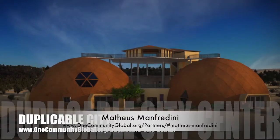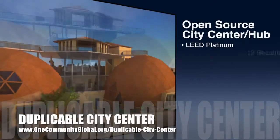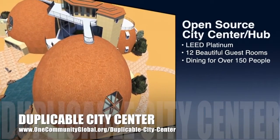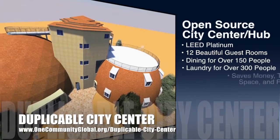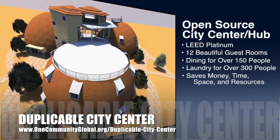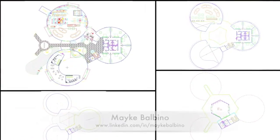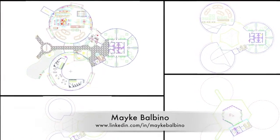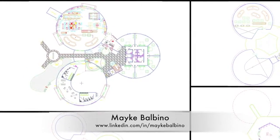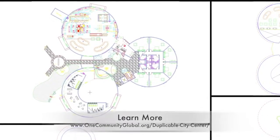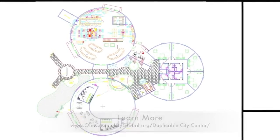One Community is also creating an open source duplicable city center designed to be LEED Platinum certified, provide 12 guest rooms, dining for over 150 people, and laundry and recreation space for over 300 people, all while saving money, time, space, and resources. This week, Mike Balbino, architecture and urban design student, completed revision four of the Duplicable City Center designs in AutoCAD. This included new bathroom designs that eliminated the need for an entry door, new locations for water fountains, new second floor table layouts and the dining dome, some slope additions to the third floor, and more cupola edits to the fourth floor.